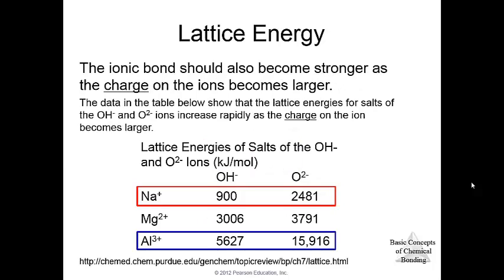As the charge increases on the ions, the ionic bond also becomes stronger. Here's another table comparing different compounds with different charges on the ions. Let's look in particular at sodium hydroxide. Sodium hydroxide has a lattice energy of 900. This is a negative 1, positive 1. Let's keep sodium and hold it constant and go over to this oxide. Now we have 2481 because this ion is more highly charged.